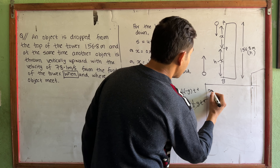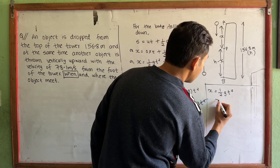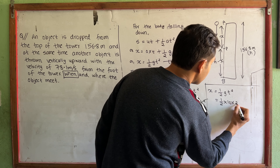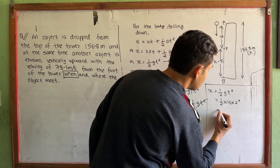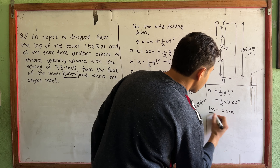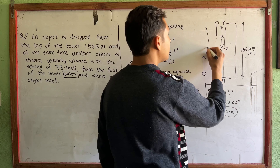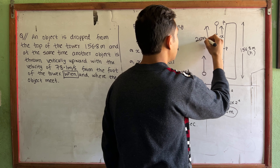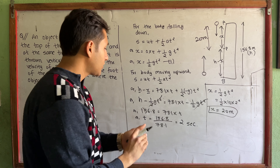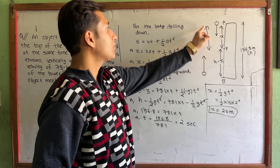Now, x equals one-half g t squared equals one-half into 10 into 2 squared equals 40 divided by 2 equals 20 meters. So the two objects meet at 20 meters from the top of the tower after 2 seconds.